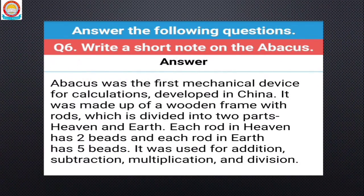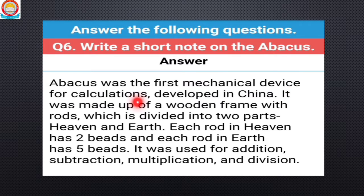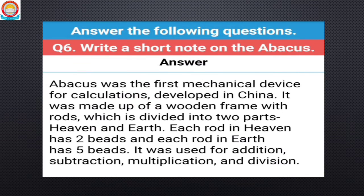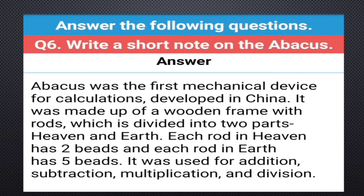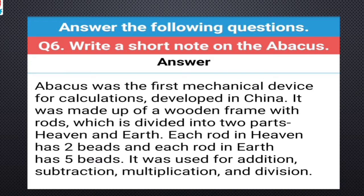Next question: write a short note on the Abacus. Abacus was the first mechanical device for calculation, first developed in China. It was made up of a wooden frame with rods divided into two parts: heaven and earth. Each rod in heaven has two beads and each rod in earth has five beads. It was used for addition, subtraction, multiplication, and division.